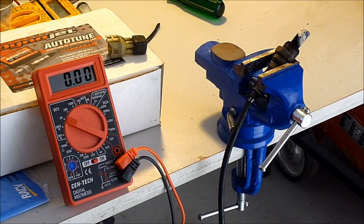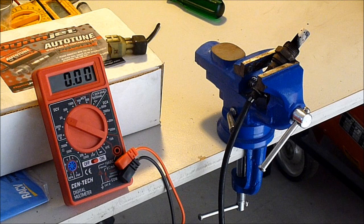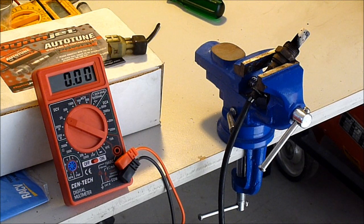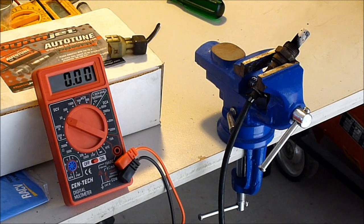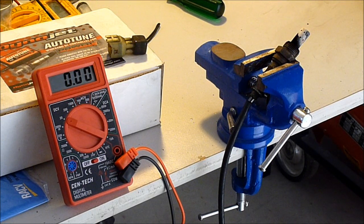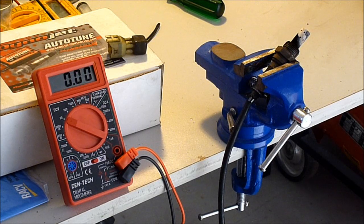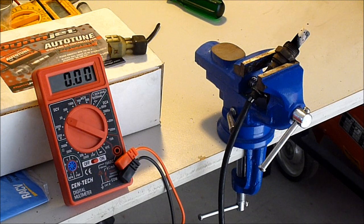It effectively tells the ECU that an O2 sensor is there. The reason that works is because when the O2 sensor is connected, even when it's cold, it effectively acts as an open circuit. There's no way for an ECU to tell if an O2 sensor is there just by looking at the sensor wires.